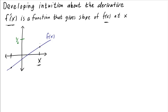If I were to plot f prime of x, it would have to be one half here, and one half over here too, because the slope is always one half. No matter where I evaluate the derivative, I always get one half because that's the slope of this line. So the derivative f prime would just be a constant function.